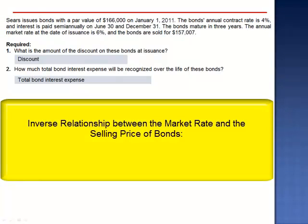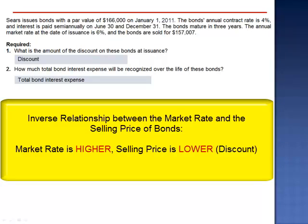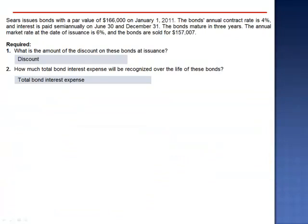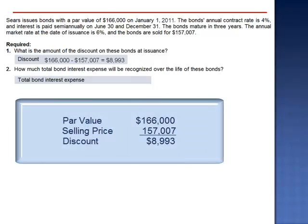Remember that there's an inverse relationship between the market rate and the selling price. When the market rate goes up, the bond's selling price goes down. In this case, since the market rate is higher than the contract rate, the bond's selling price is lower than par value. This bond is said to sell at a discount. The amount of the discount is the difference between the selling price and the par value: $166,000 minus the $157,007 selling price is an initial discount of $8,993.